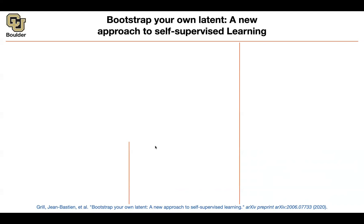Can you get rid of both of them? Do you really need negative examples? Are they necessary? Can you write a loss function that gets rid of that? It's really surprising that Bootstrap Your Own Latent is going to help you get rid of the negative examples.